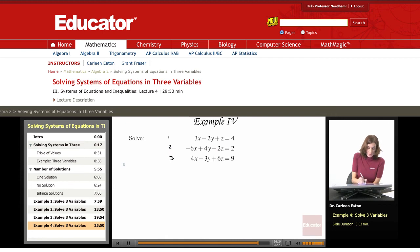So I want to work with the first and the second equations. I want to get the z to drop out, but I need to multiply this by two first. So let me do that right over here.